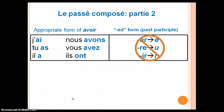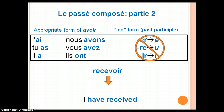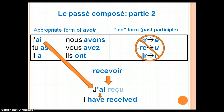Yet another example of an irregular verb with its own unique past participle is recevoir. Suppose I want to say, 'I have received.' First, I select the appropriate form of avoir — in this case, j'ai. However, since recevoir is irregular, I must use its special past participle form: reçu. Now I have j'ai reçu — I have received, or I did receive.